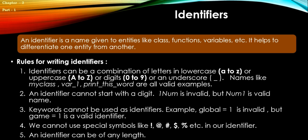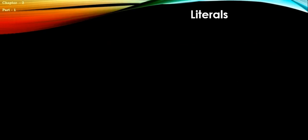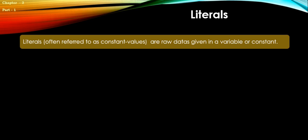Now after identifiers, let's see literals. Literals, often referred to as constant values, are the raw data given in a variable or constant. In Python there are various types of literals and they are as follows.